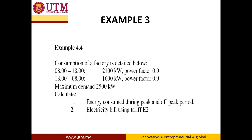Example 3: A factory operates from 8 am to 6 pm at 2,100 kilowatts with a power factor of 0.9, and from 6 pm to 8 am the next day at 1,600 kilowatts with a power factor of 0.9. The factory declared its maximum demand at 2,500 kilowatts. We need to calculate energy consumed during peak and off-peak periods, then calculate the electricity bill using Tariff E2.